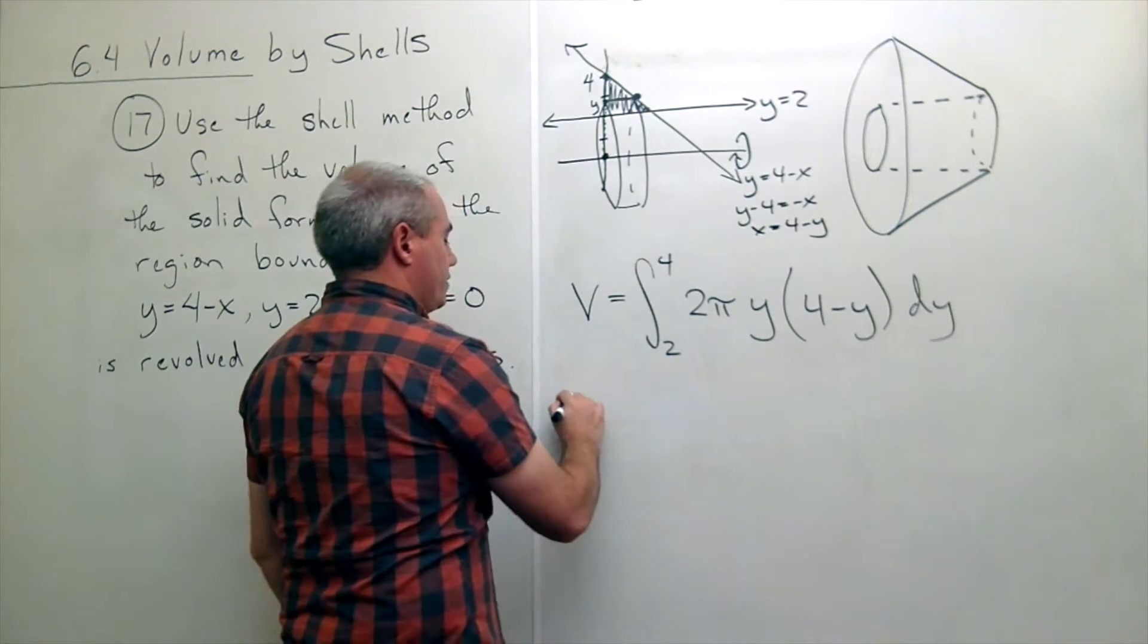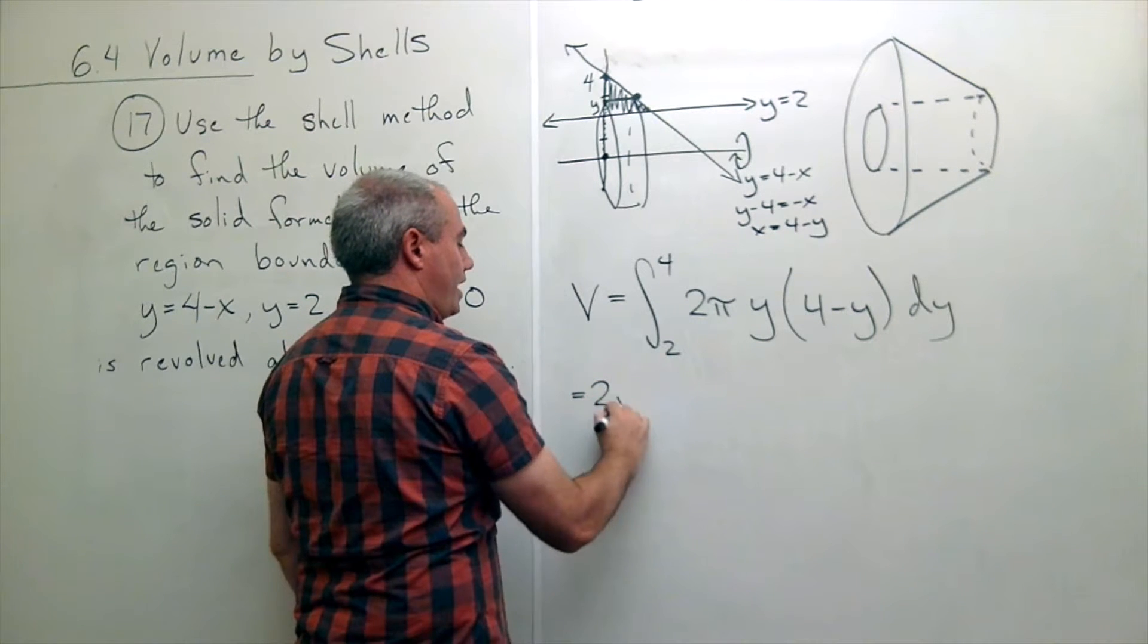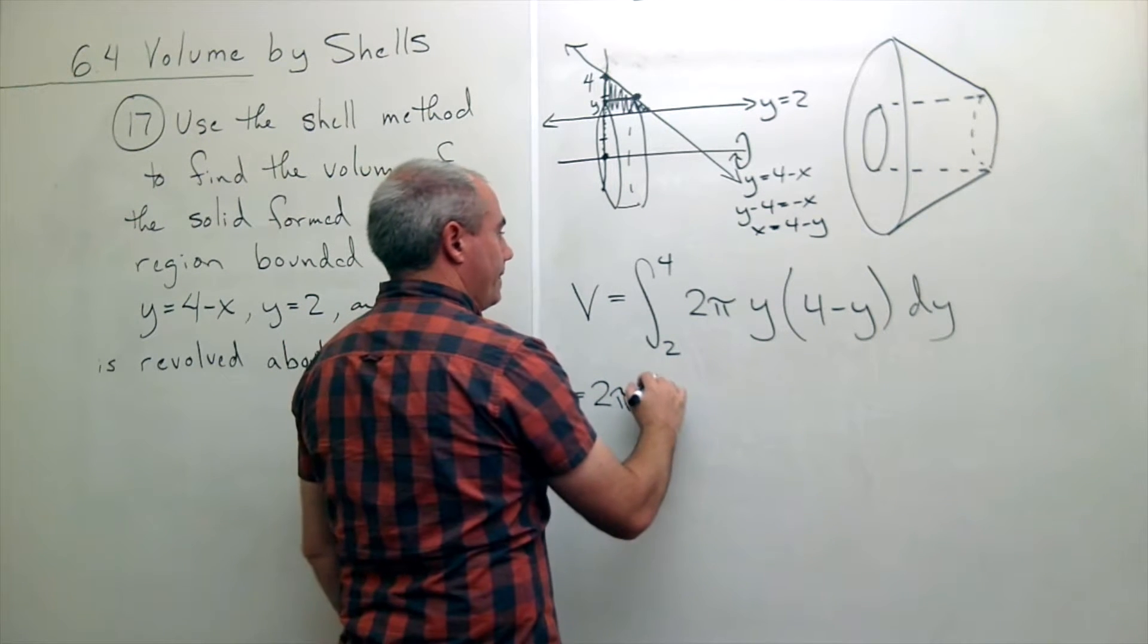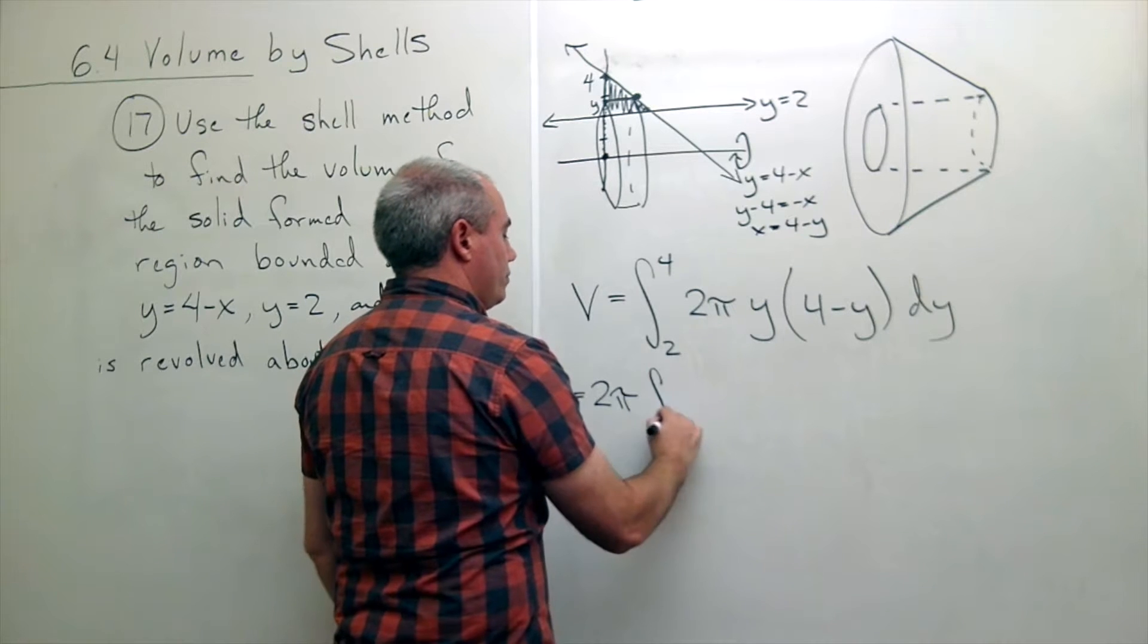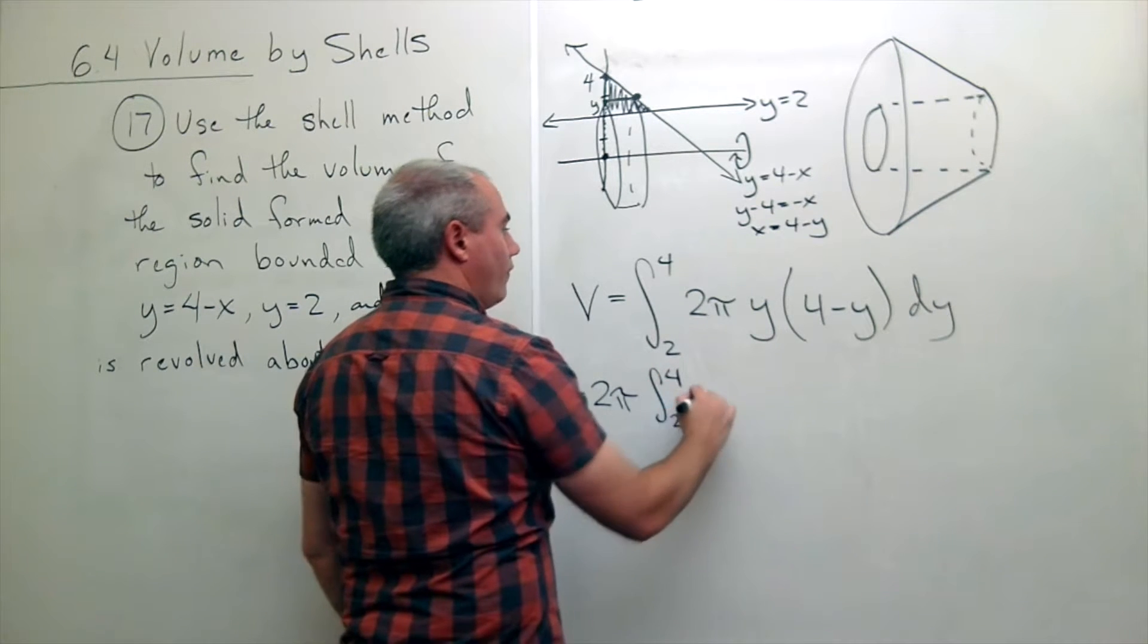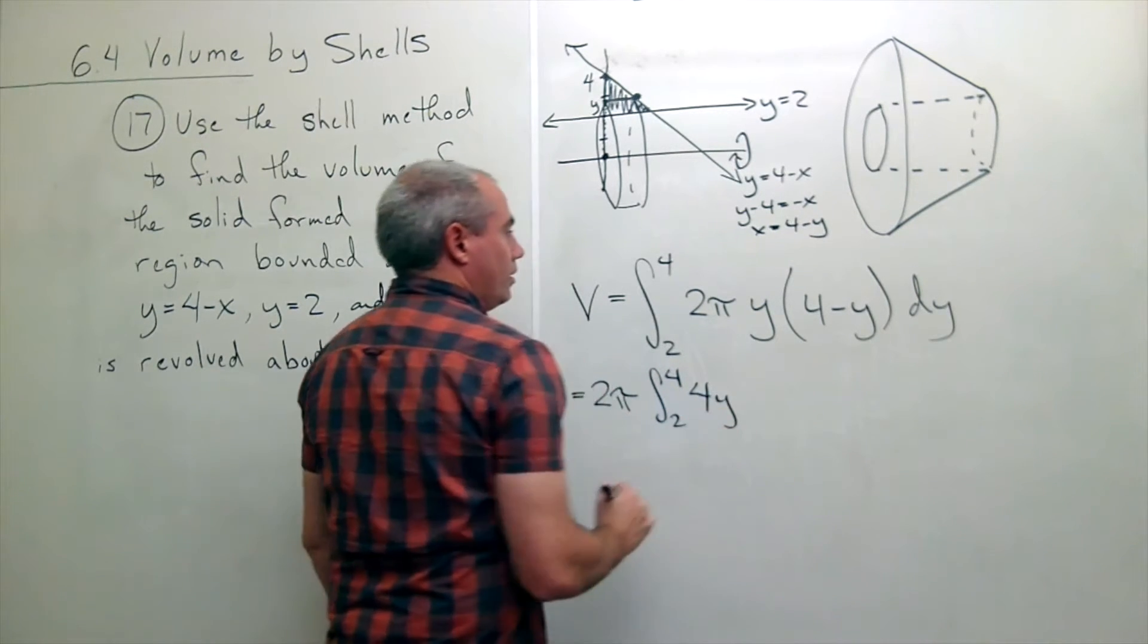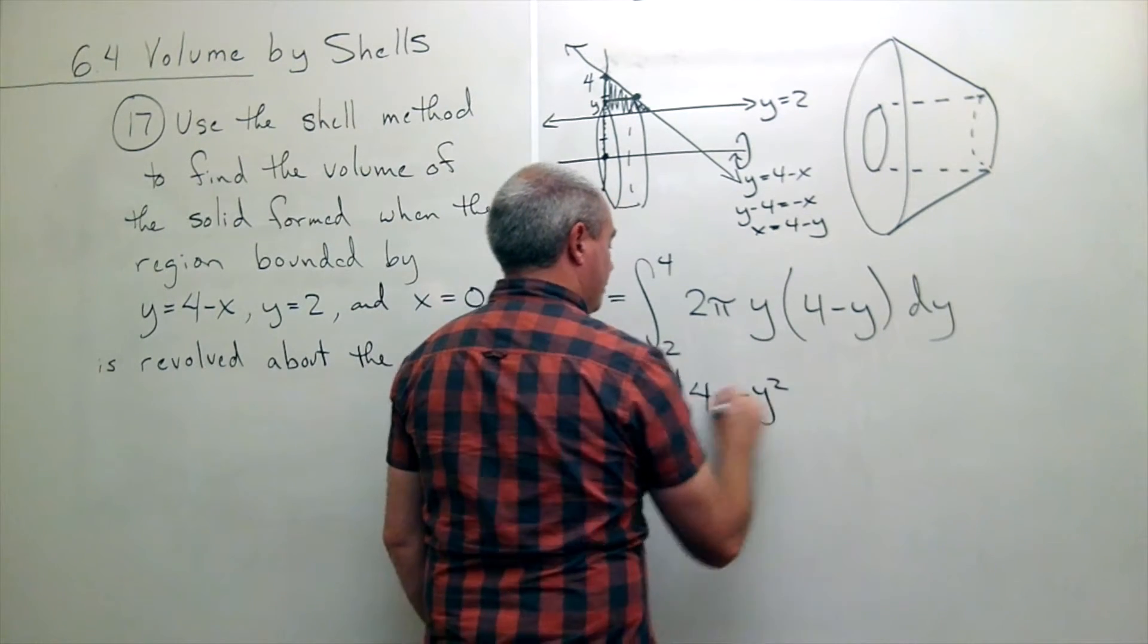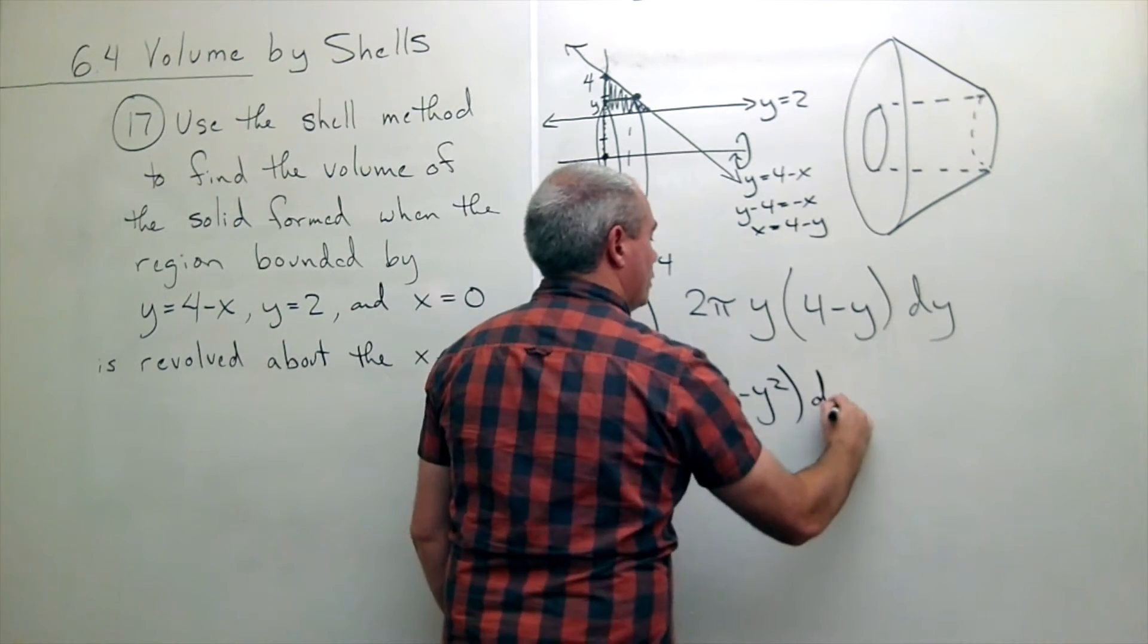So first of all, I'll pull out the two pi, and I have integral from two to four of four y minus y squared dy.